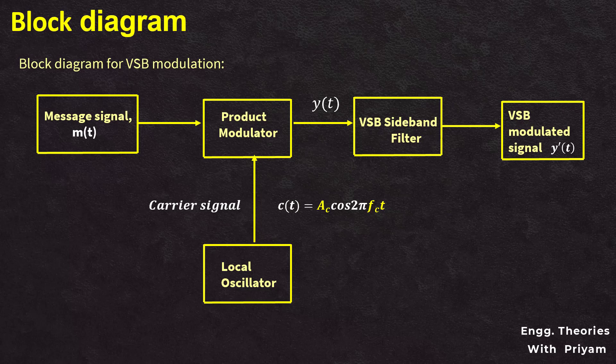The output of the sideband filter is the VSB modulated signal y'(t), which is then transmitted. The sideband filter is a crucial component of VSB signal generation. The filter must be carefully designed to pass the desired amount of vestige from the other sideband, as the amount of vestige passed will determine the bandwidth of the VSB modulated signal.